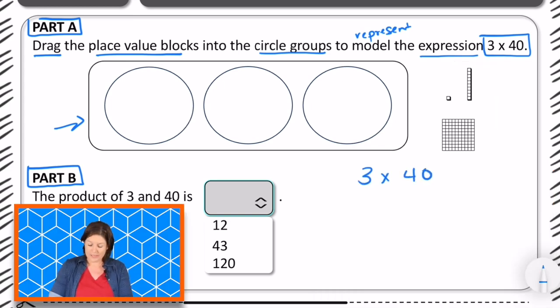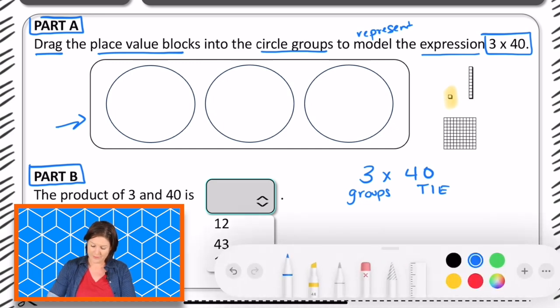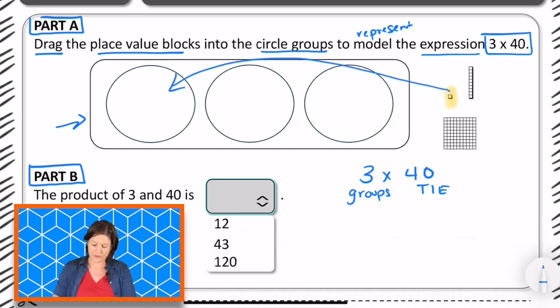And I know that 3 stands for the groups. And guess what? We have 3 groups. We have 3 circles, right? 3 groups of 40. And I'm going to say things in each, things in each. Okay, so I need to drag the place value block. So what I'm going to do is, since I need 40 things in each one, now technically, I could take 40 of these ones and drag them into each circle, right? 40 of those. But that would take a lot of time.